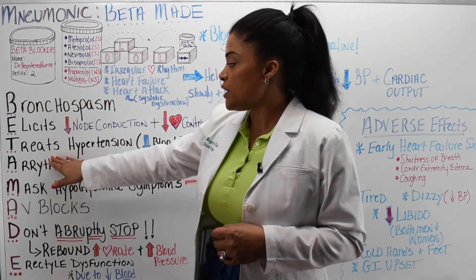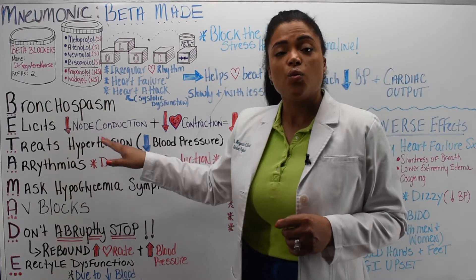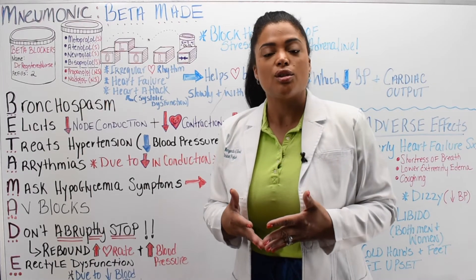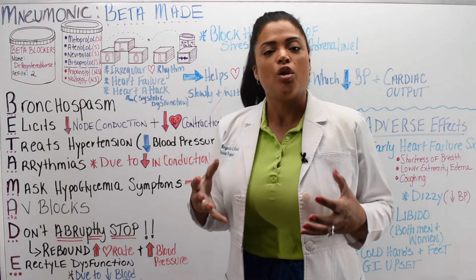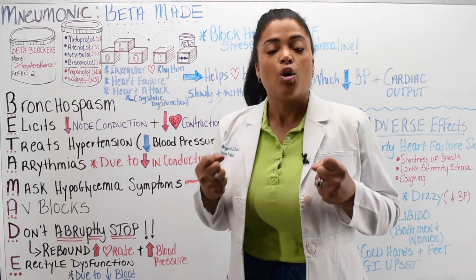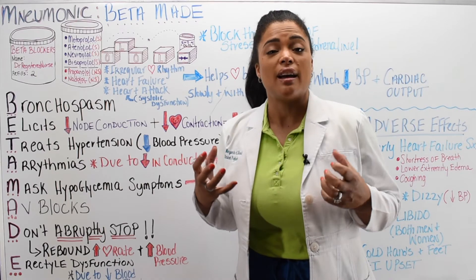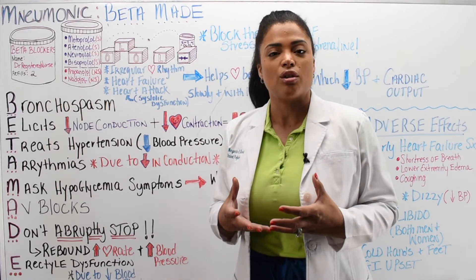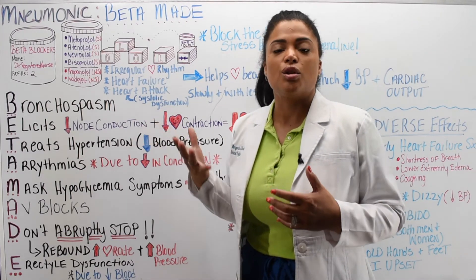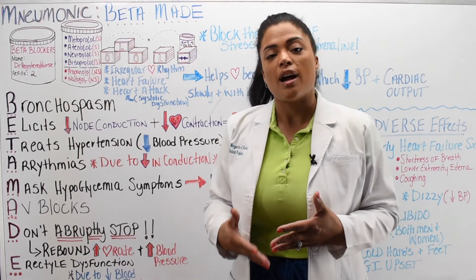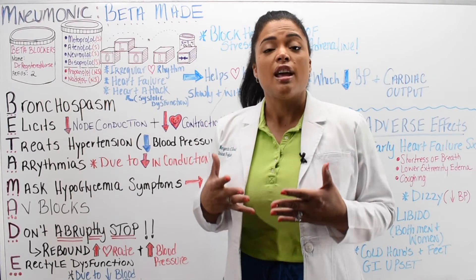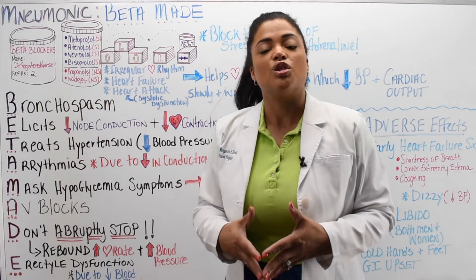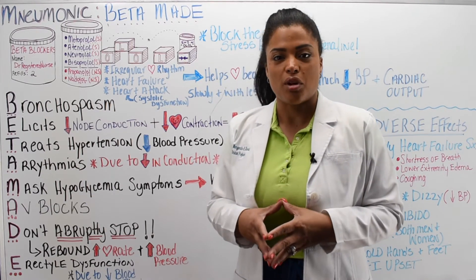T is for treat hypertension. Beta blockers are given to treat hypertension because the juxtaglomerular cells of the kidneys release renin, which stimulates angiotensin 2 — a powerful vasoconstrictor. The beta blocker antagonizes that effect, so instead of increasing blood pressure, the patient's peripheral vascular resistance decreases due to vasodilation and blood pressure drops.